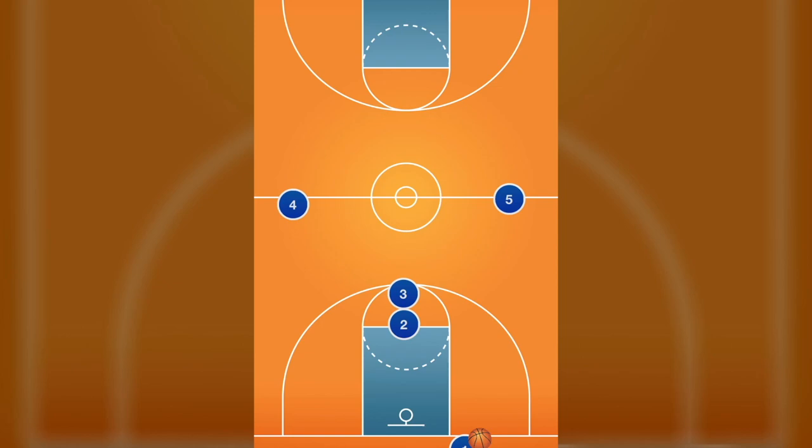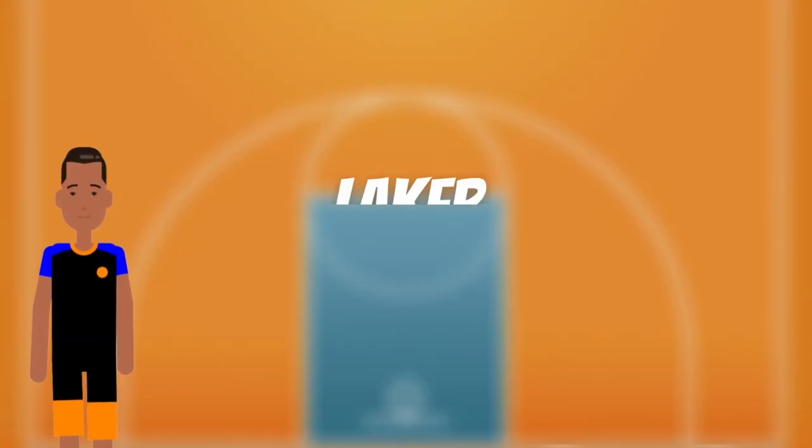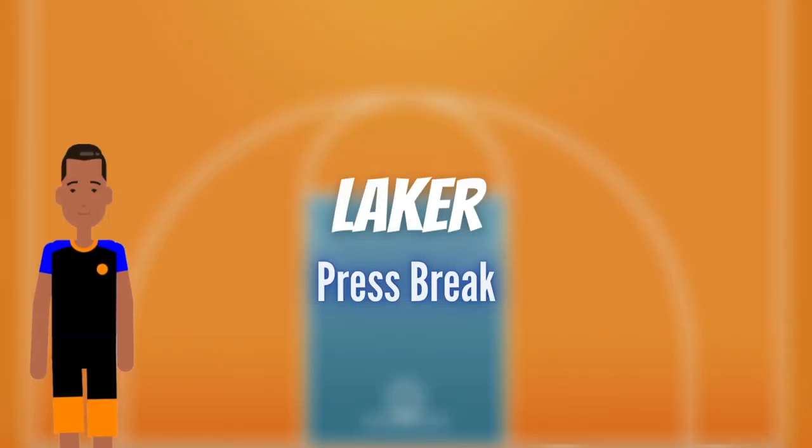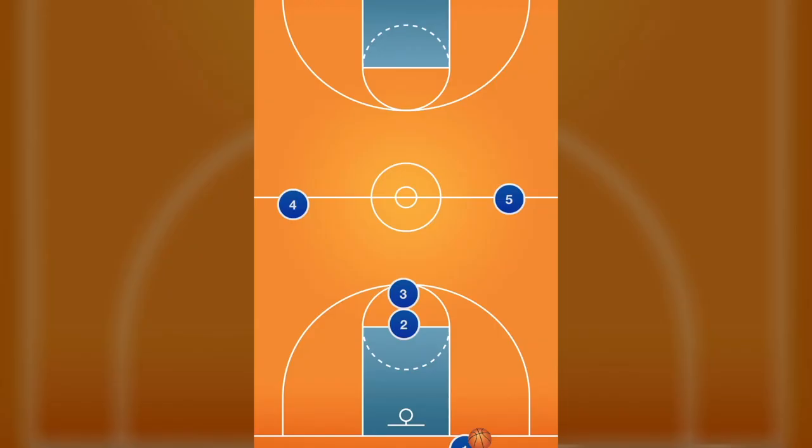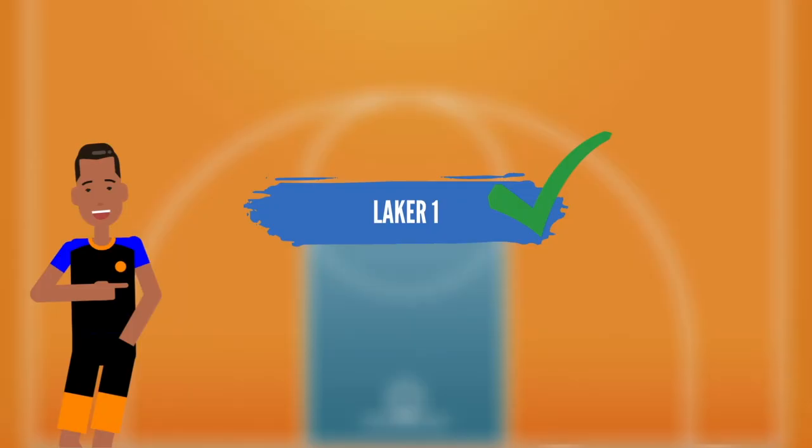Plays can have any name that a coach or team desires. Let's call this press break Laker. For this play, there is a double stack on the foul line and two players at half-court.